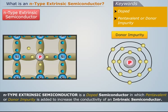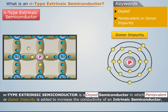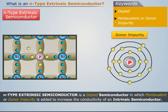Thus, an N-type extrinsic semiconductor is a doped semiconductor in which pentavalent or donor impurity is added to increase the conductivity of an intrinsic semiconductor. Let us understand how the addition of pentavalent impurity transforms an intrinsic semiconductor into an N-type semiconductor.